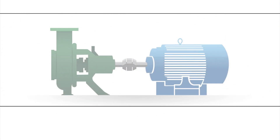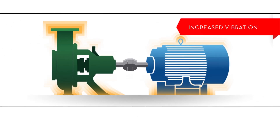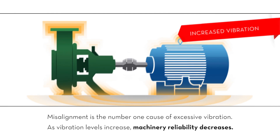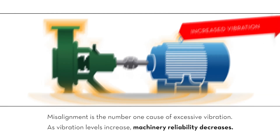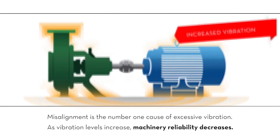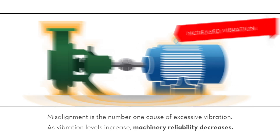Number four: increased vibration. Misalignment is the number one cause of excessive vibration. As vibration levels increase, machinery reliability decreases.